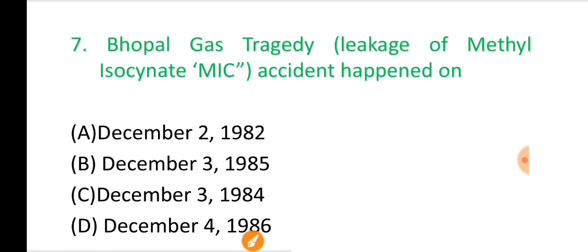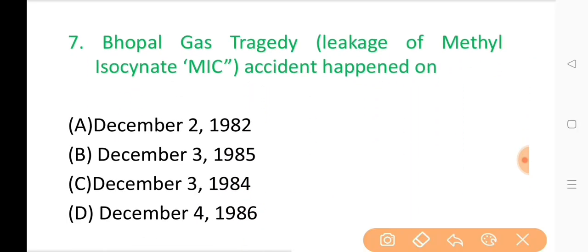Question No. 7: Bhopal gas tragedy — leakage of methyl isocyanate (MIC) — accident happened on? The correct answer is Option C: December 3, 1984.